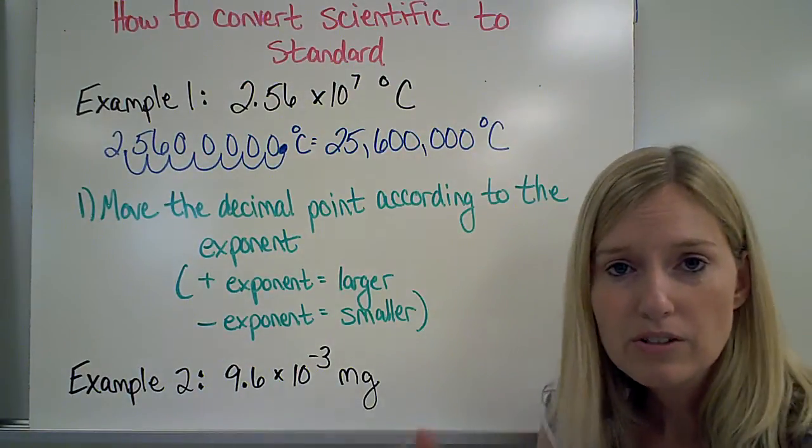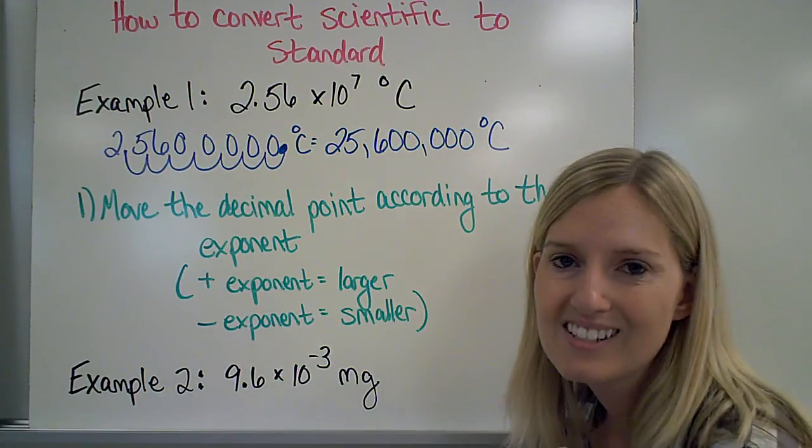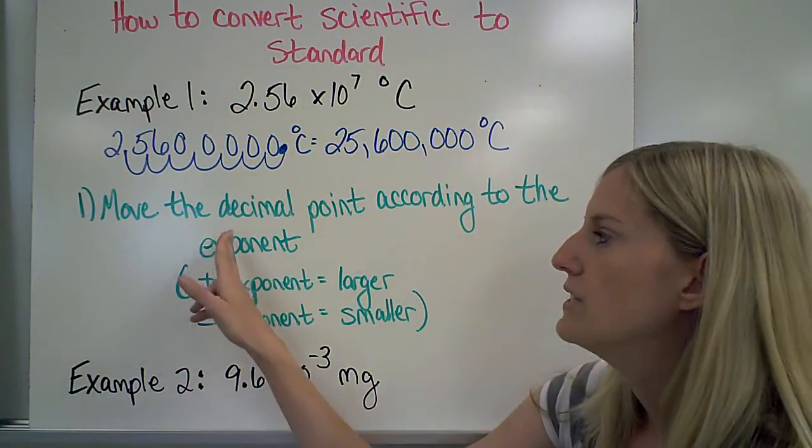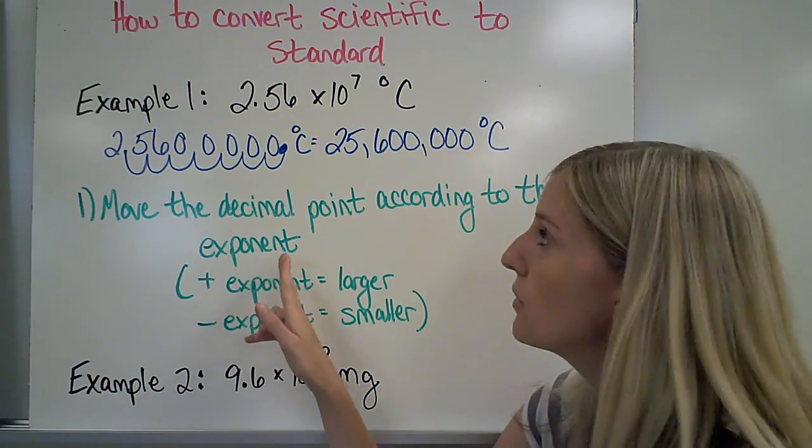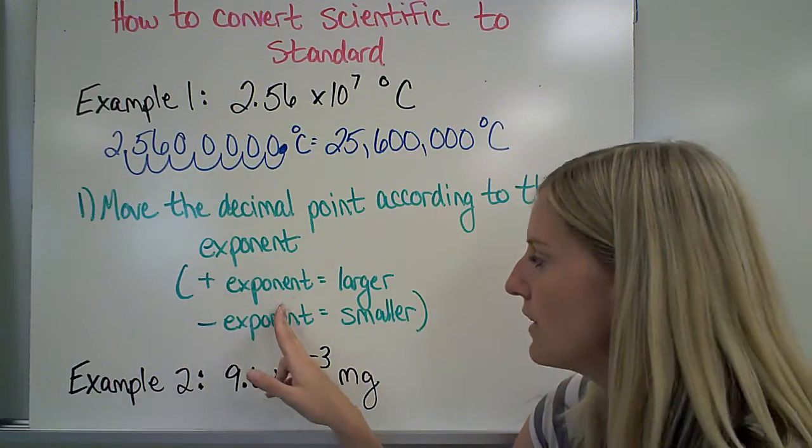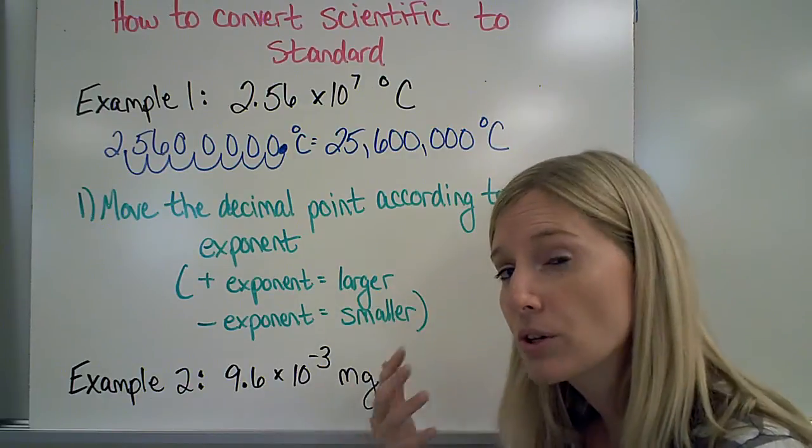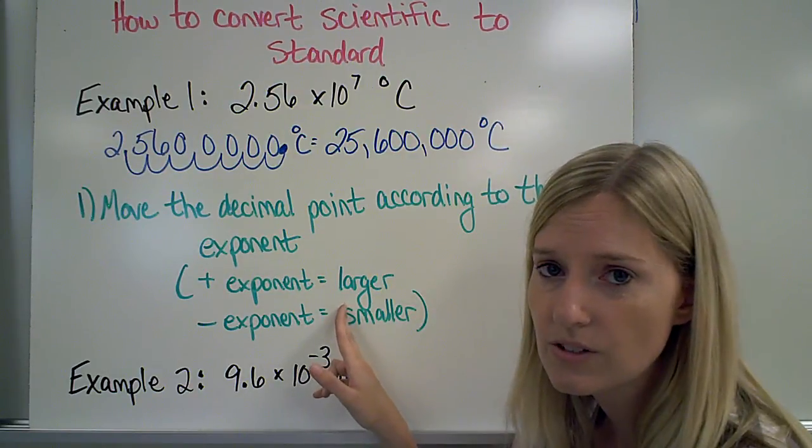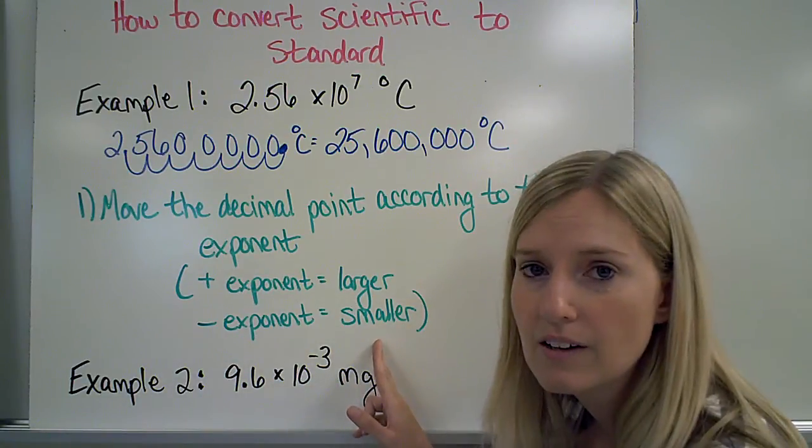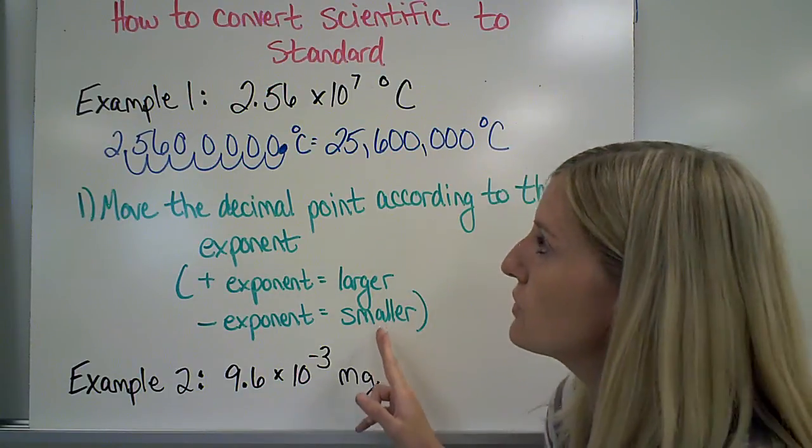And of course, we can do this backwards. So if I have a number in scientific notation, and I want to take it out and look at it in standard notation because that's what I'm more used to, what I want to do is move the decimal point according to the exponent. So, as we learned before, the exponent tells us a lot about the number. If I have a positive exponent, that means that my standard notation number, or the number I'm more used to, is actually larger than the scientific notation 1 through 10 number. And if it's a negative exponent, then my standard notation number is smaller than my 1 through 10 number.